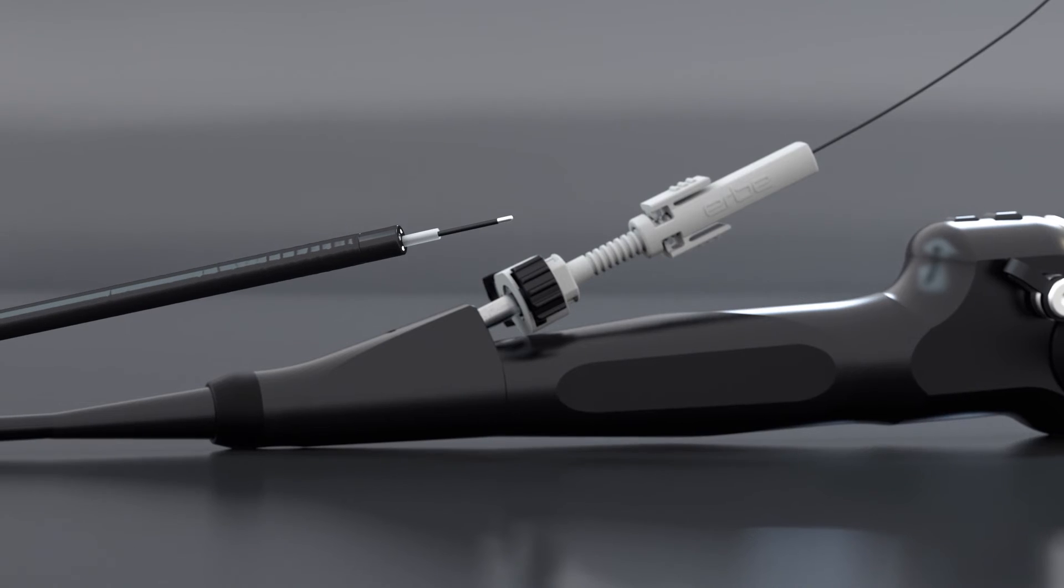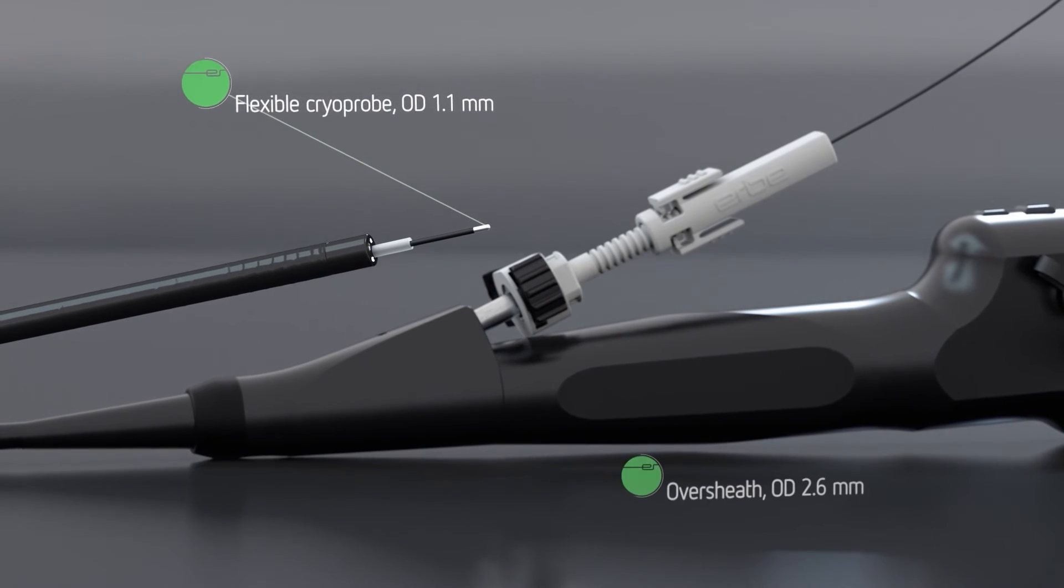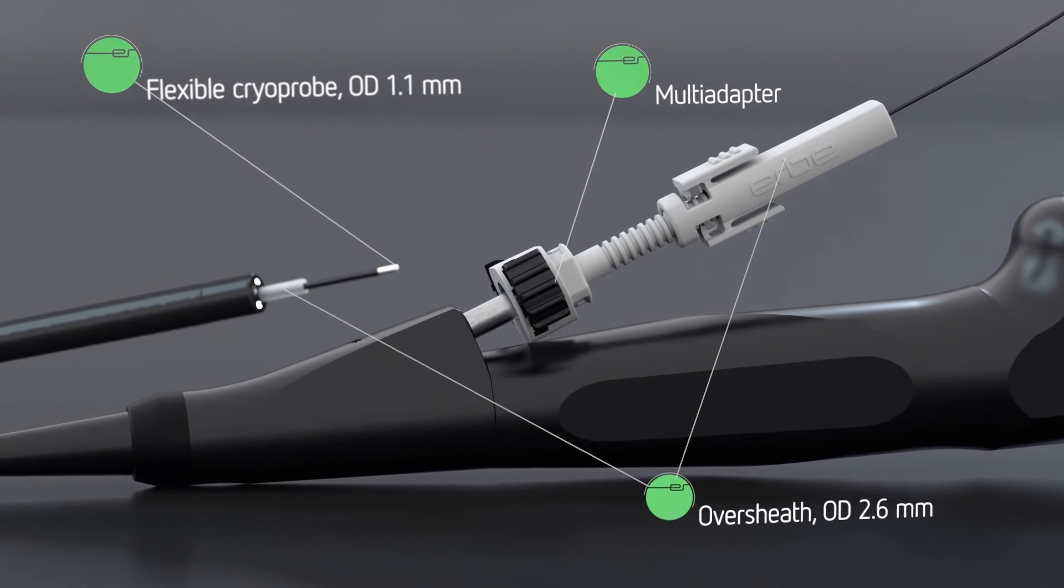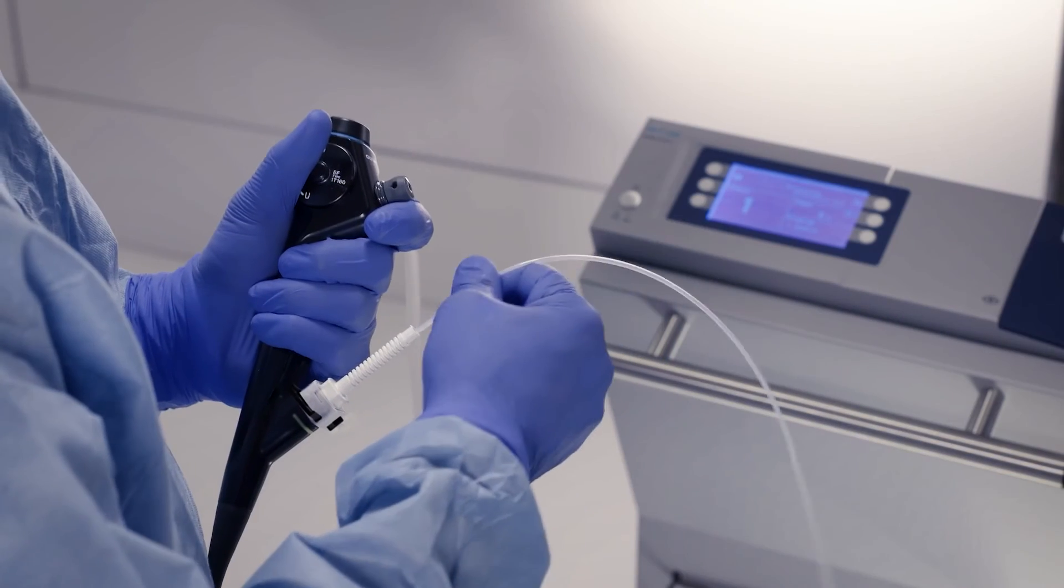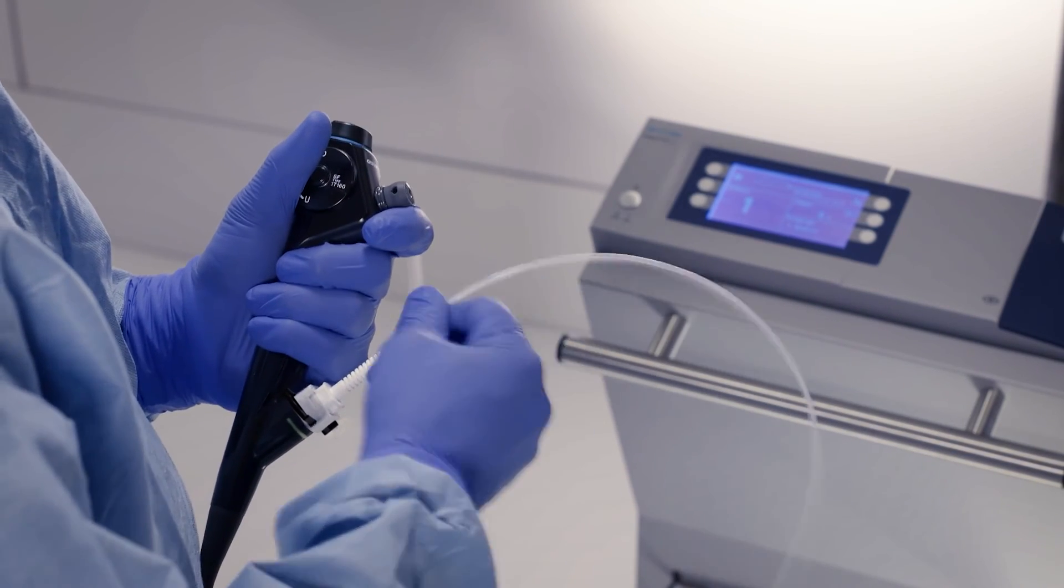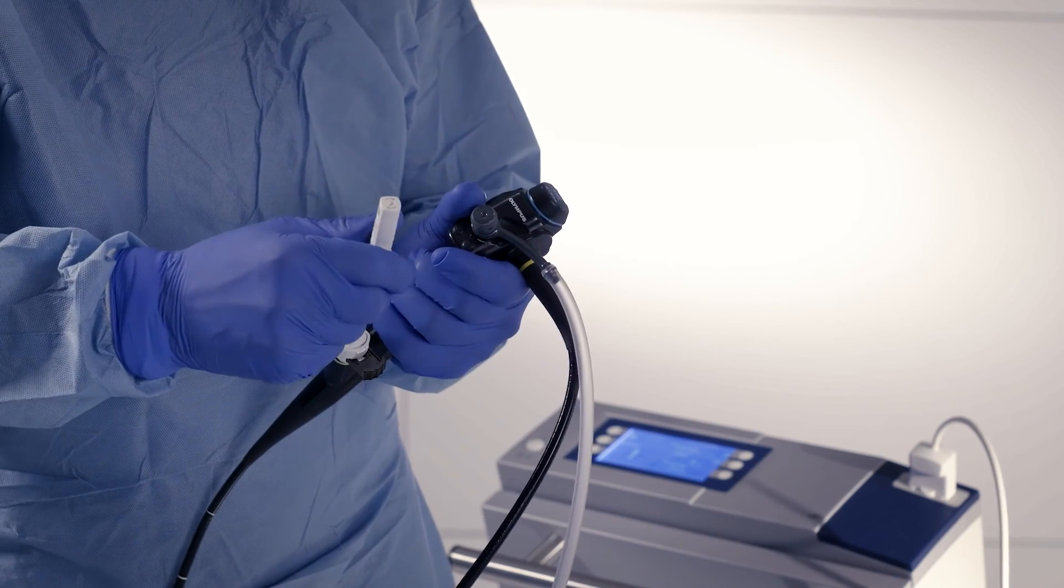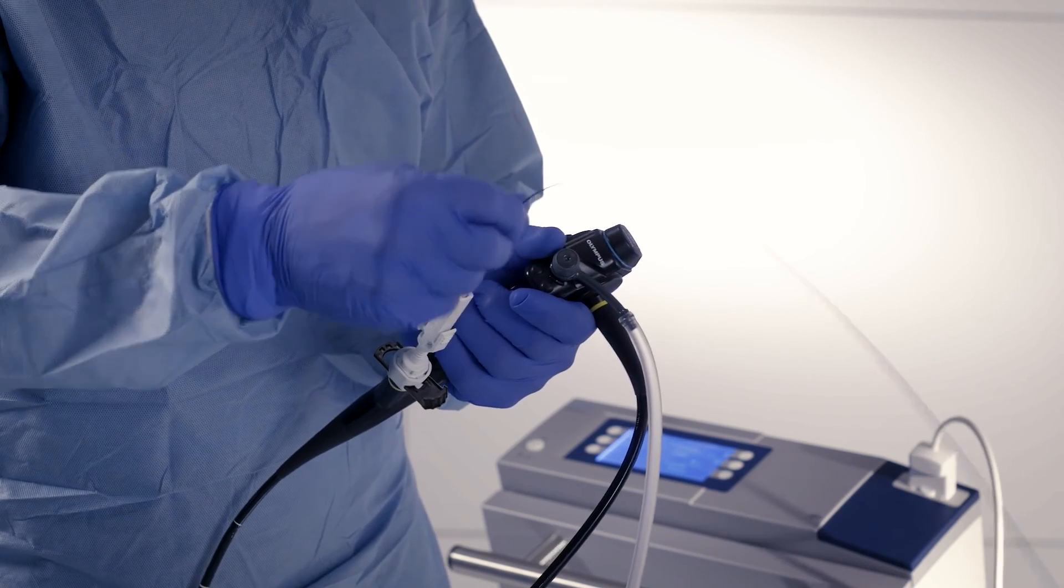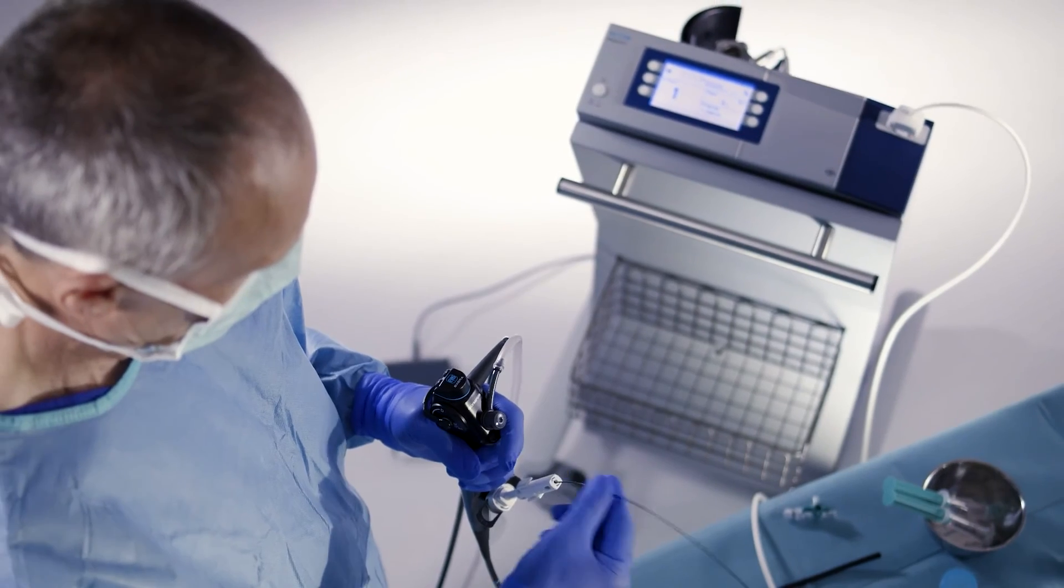The 1.1 mm cryoprobe with Oversheet is our latest product development. The Oversheet is inserted into the working channel of a standard bronchoscope via the multi-adapter. Then, the flexible cryoprobe is inserted until it becomes visible in the endoscope image.